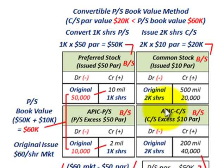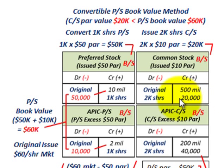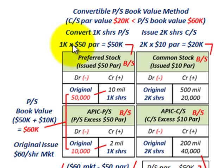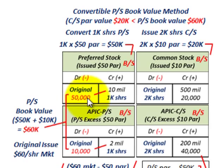We'll have additional paid-in capital accounts for both the preferred stock and common stock. For our common stock par account: 2,000 shares issued at $10 par equals $20,000, so we increase our common stock par account by $20,000. For the preferred stock par account: those 1,000 shares being converted at $50 par per share equals $50,000, so we debit or reduce our preferred stock account by $50,000.